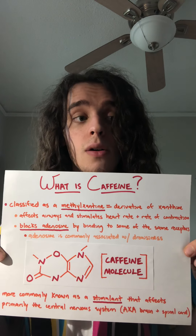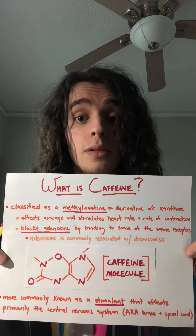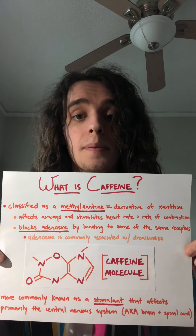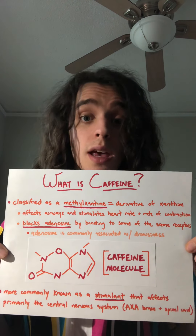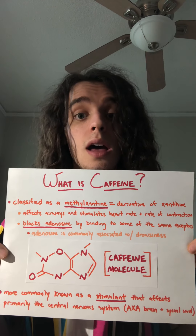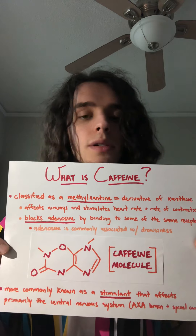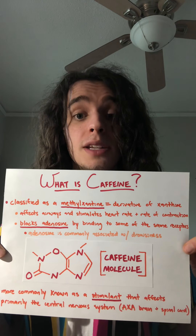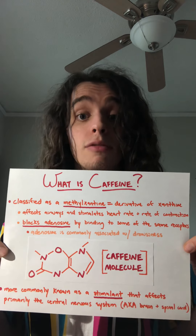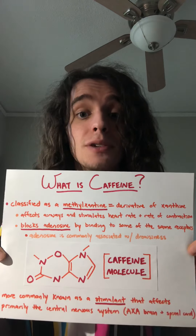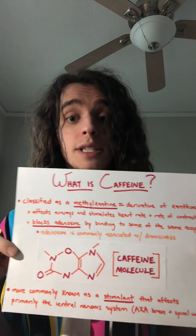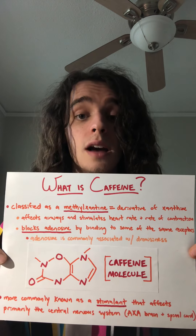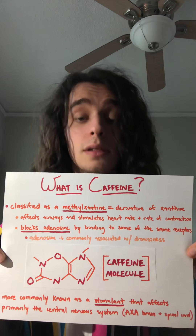Now, sort of how caffeine affects us on a molecular level is that it blocks adenosine, which is a chemical compound commonly associated with drowsiness. So essentially this caffeine molecule will bind to some of the adenosine receptors. Obviously, if the caffeine is taking over that receptor, then the adenosine cannot bind to it. And so, of course, if adenosine can't bind to its receptor and it's commonly associated with drowsiness, then caffeine will counteract this effect.